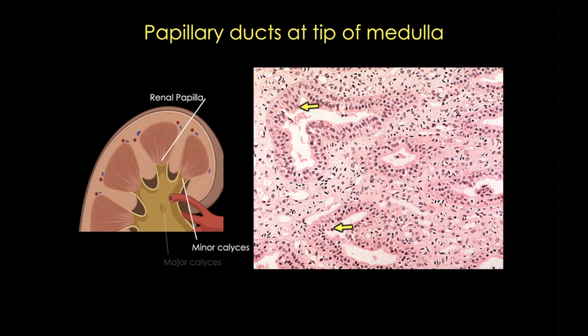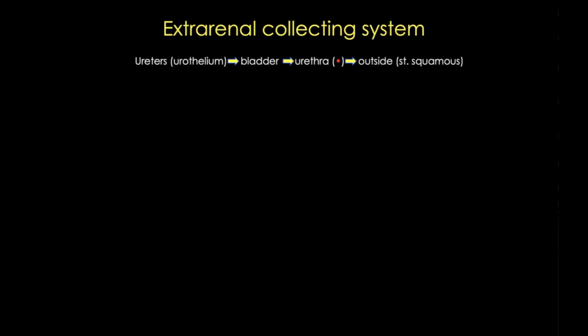Urine is next collected in the minor calyces, then the major calyces, and eventually exits into the ureter. From the ureter, urine collects in the bladder and exits through the urethra and out of the body. The epithelium changes from urothelium to stratified squamous epithelium.